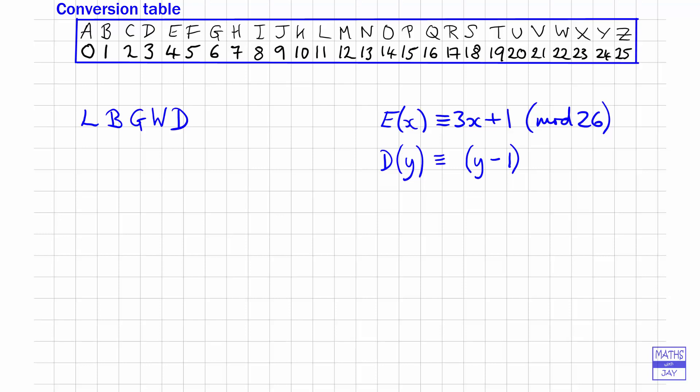So the opposite of multiplying by 3 and adding 1 is taking away 1 and then multiplying by what we call a multiplicative inverse of 3. Now we found this last time—we saw that because 9 times 3 is 27, and 27 is congruent to 1 in mod 26, that 9 is a multiplicative inverse of 3.